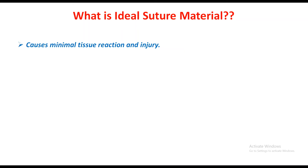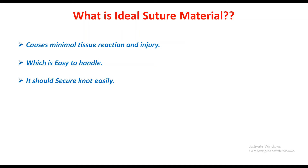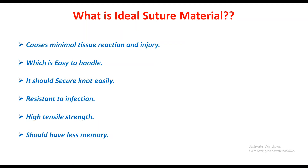Now, what is an ideal suture material — this is also a question that is asked. An ideal suture material causes minimal tissue reaction and injury, is easy to handle, should secure the knot easily without opening, has resistance to infection, has high tensile strength, and should have less memory.